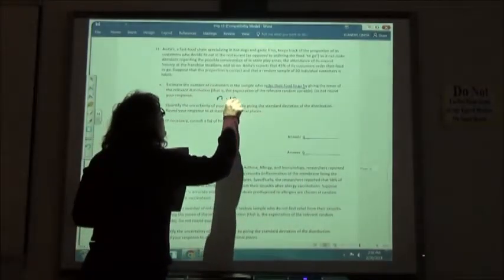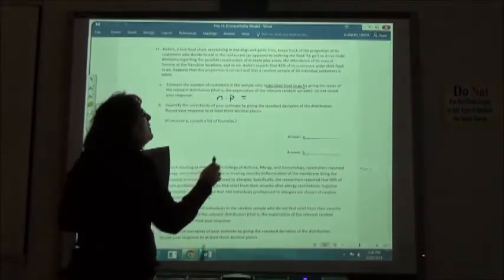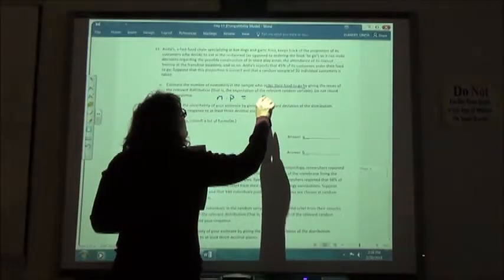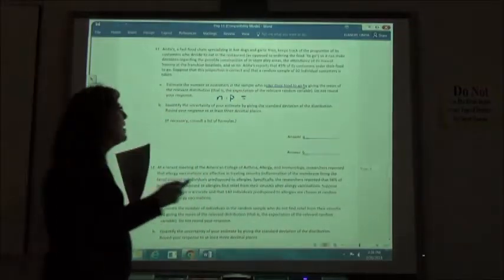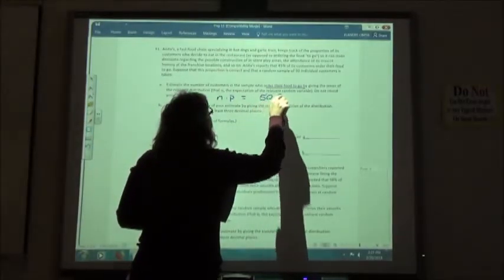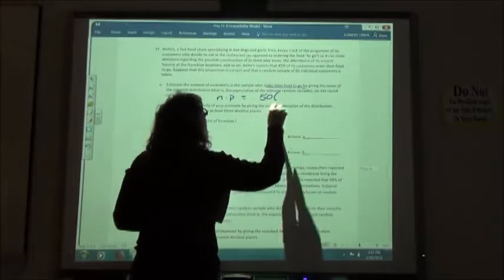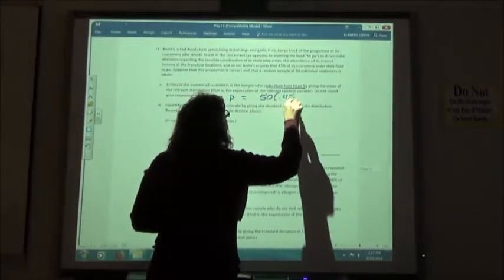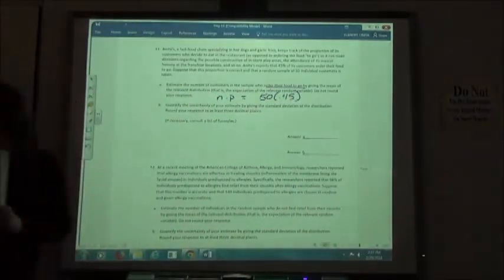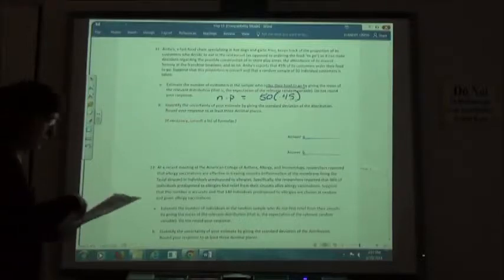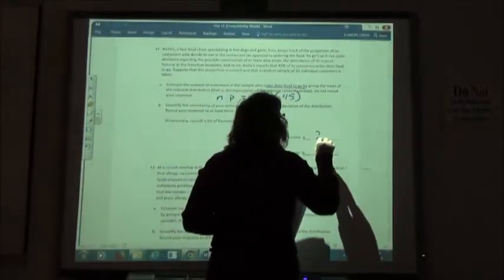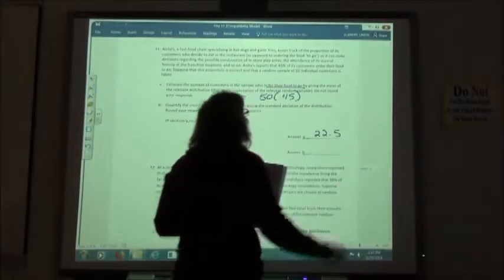So, I'm going to have N times P. My N is 50, the number of people sampled, and the P is .45, the 45% that ordered their food to go. 22.5, then is your mean.